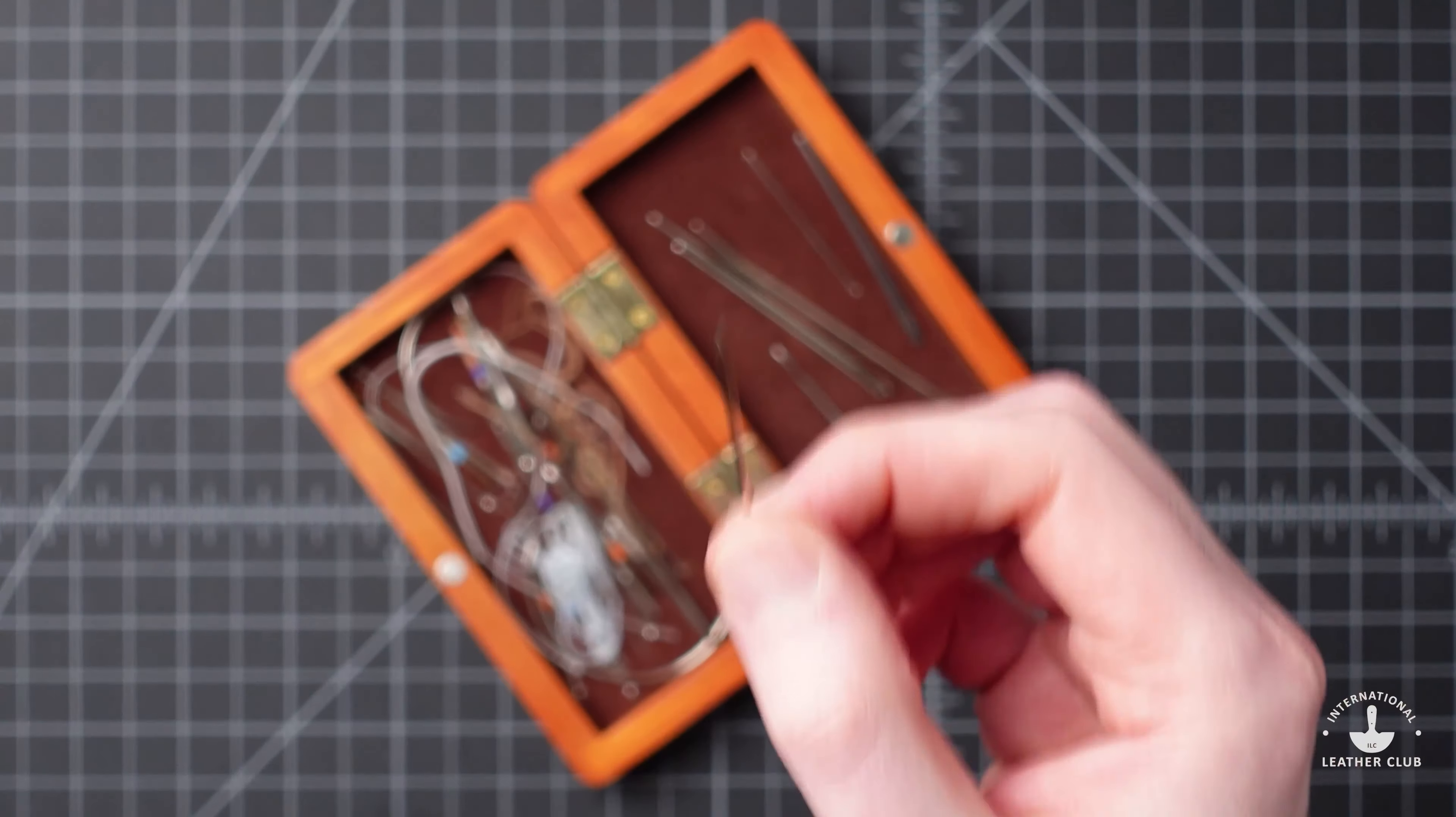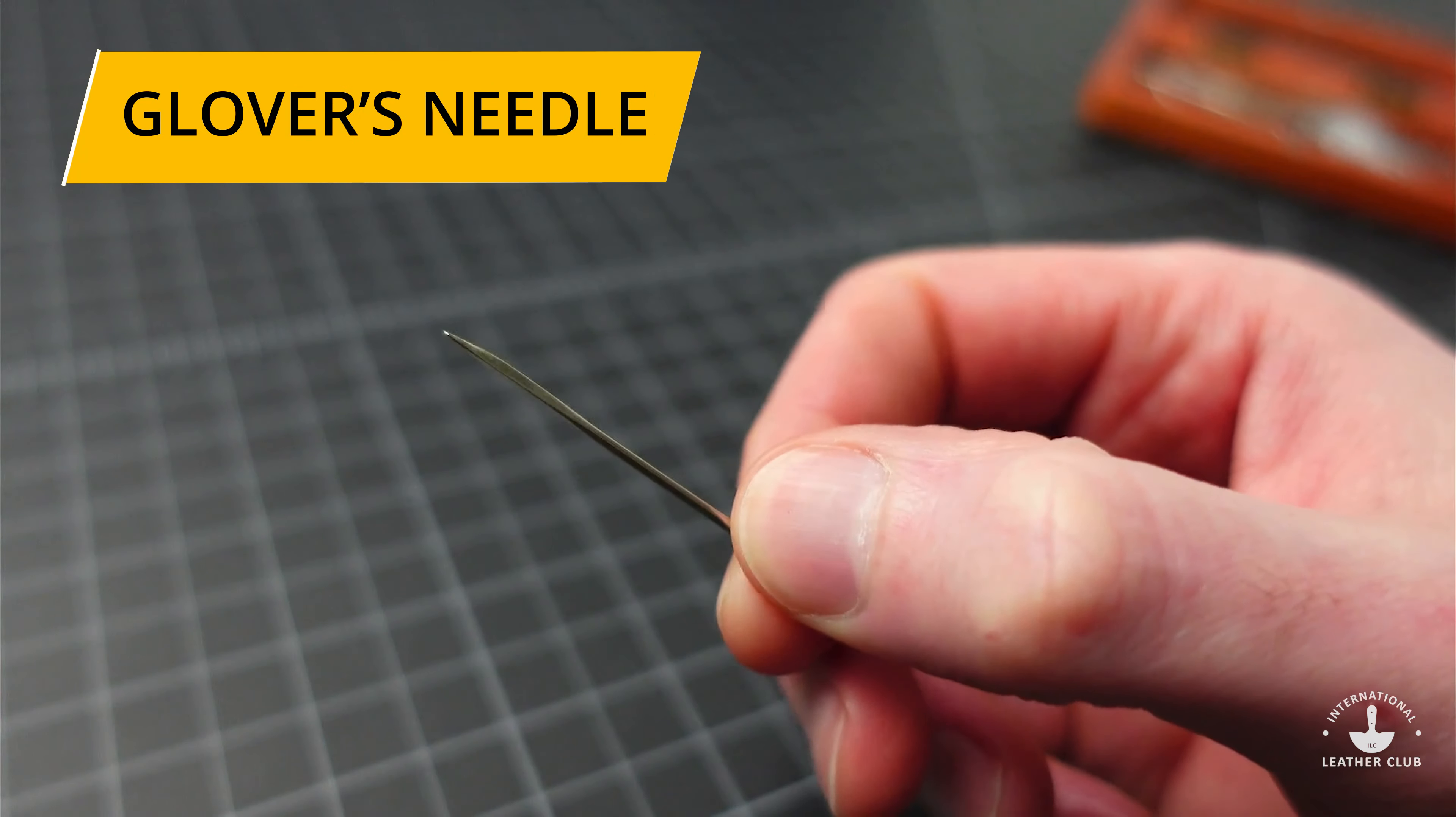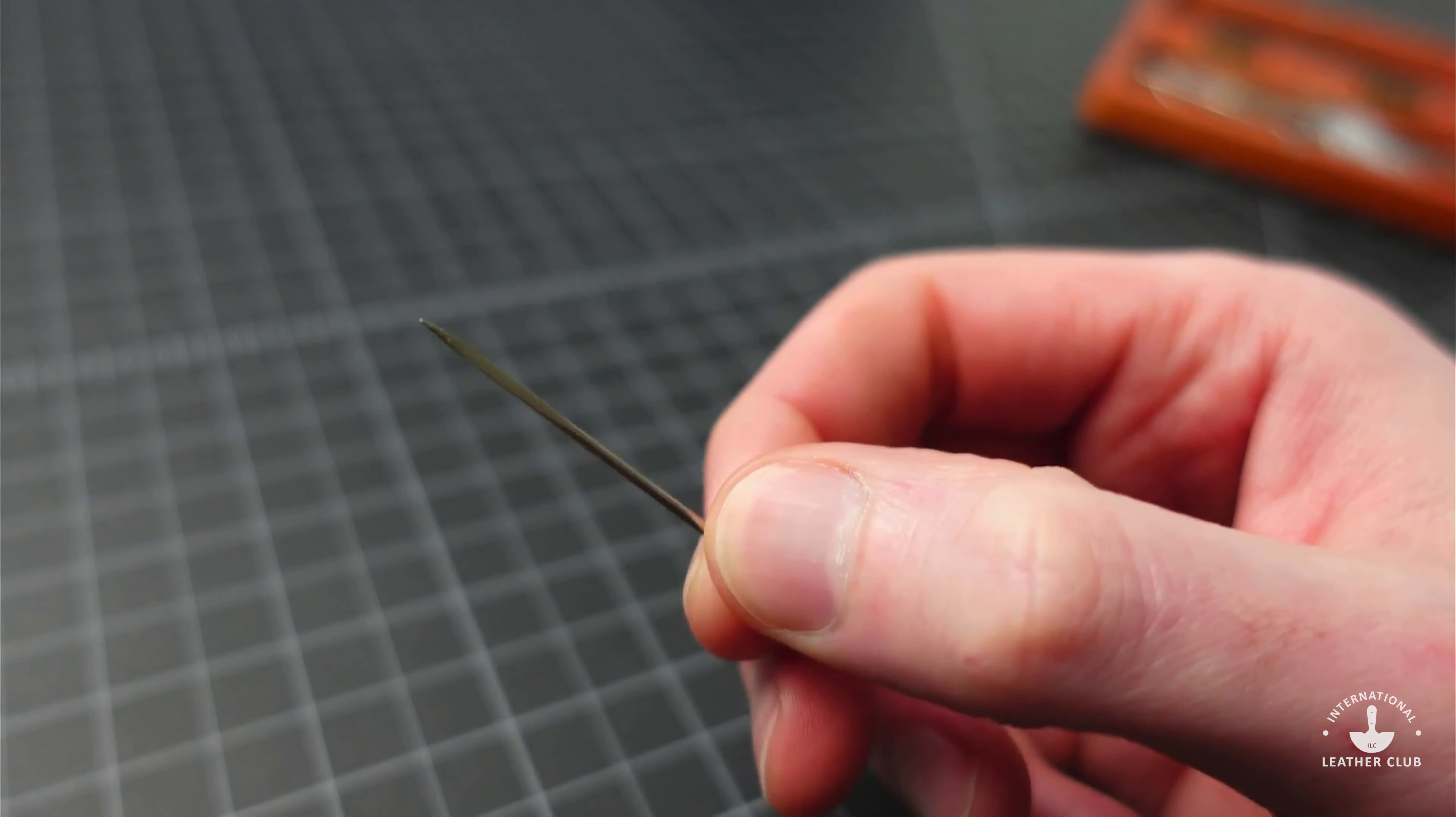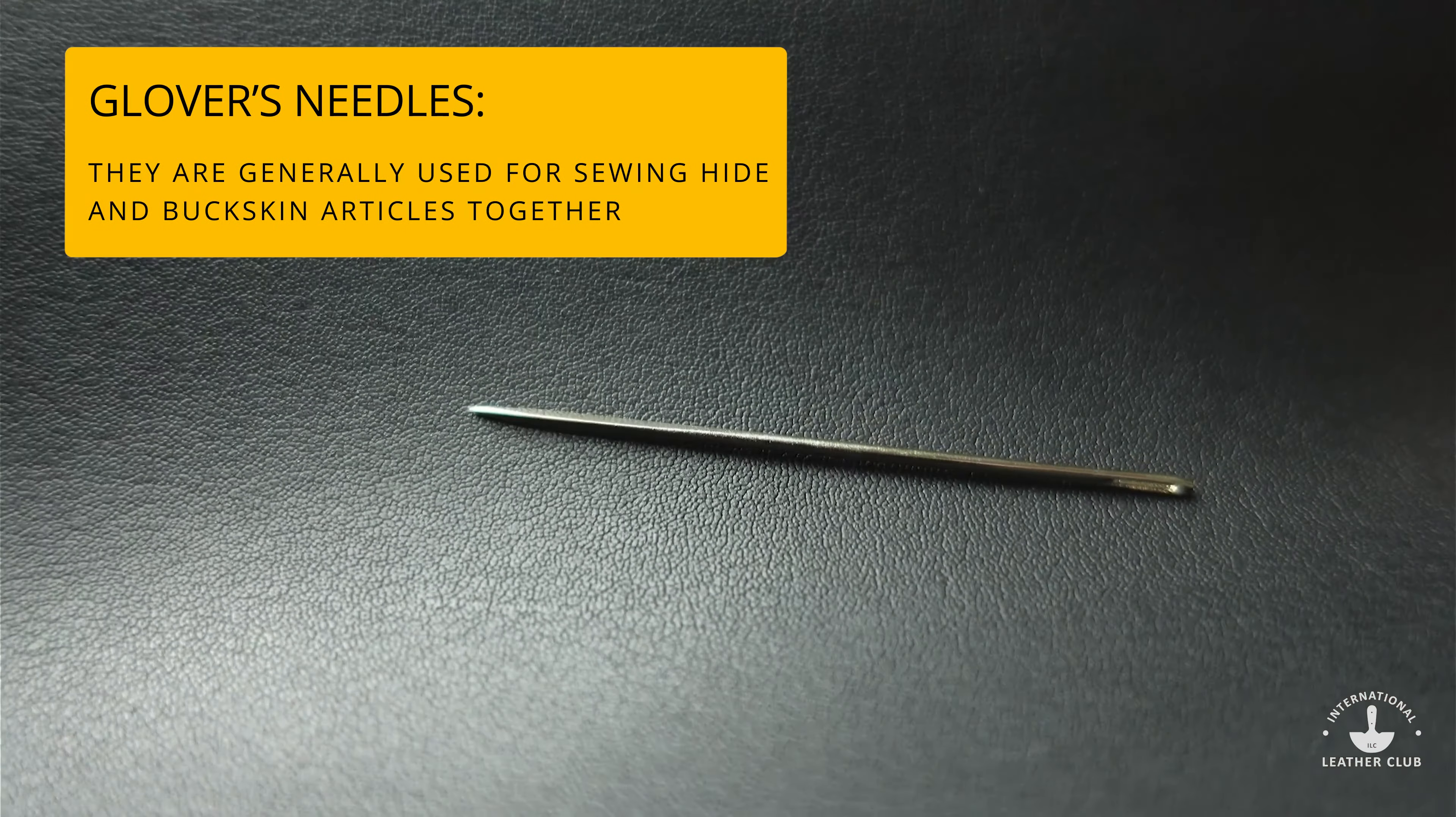The first one I'm going to look at is what's called a Glover's Needle. Now these are tricky to see, so I'm going to backstop them with this black and then we'll be able to see it a little more closely.